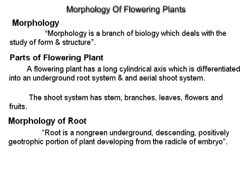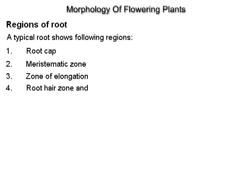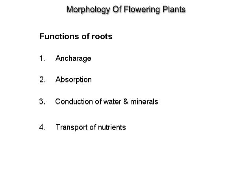Morphology of a root. Root is a non-green, underground, descending, positively geotropic portion of a plant developing from the radicle of the embryo. A typical root shows the following regions: root cap, meristematic zone, zone of elongation, root hair zone and maturation zone. Functions of roots include anchorage, absorption, conduction of water and minerals, and transport of nutrients.